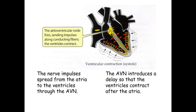Once that has happened, there'll be a short period of time where there is no wave of excitation occurring, which would be diastole, where the heart muscle is at rest. Then the SAN would release another wave of excitation that spreads across both atria, and the cycle begins again.